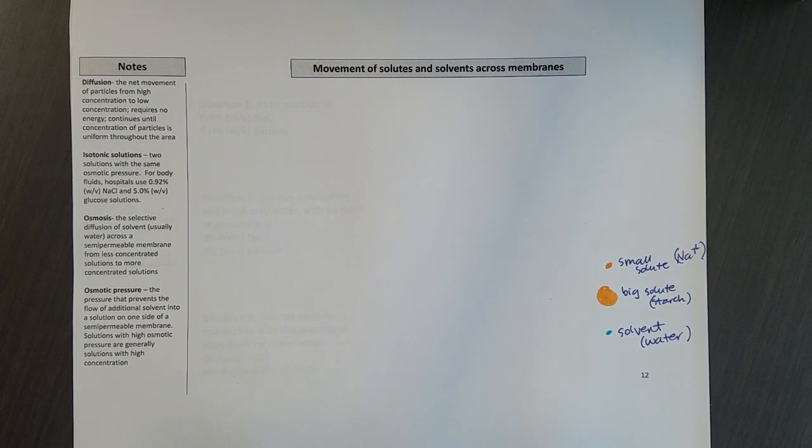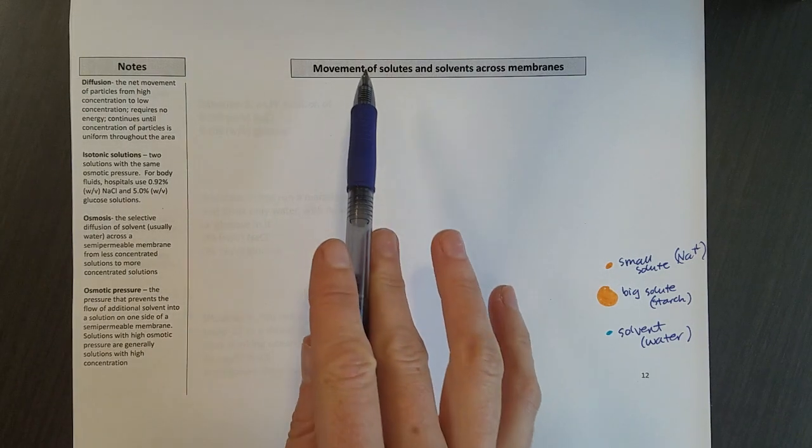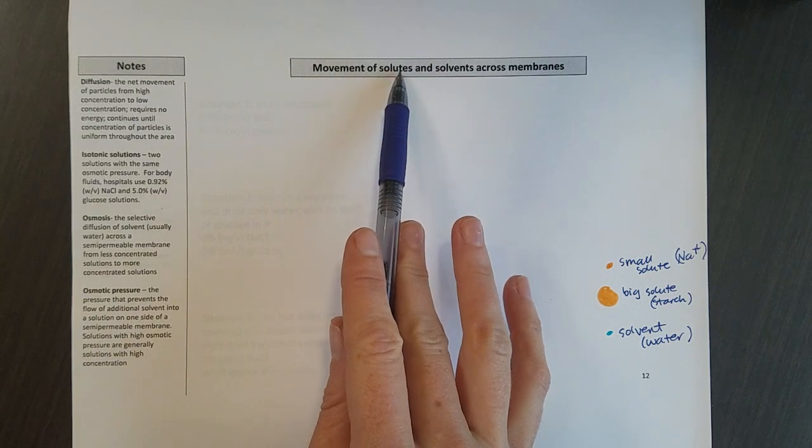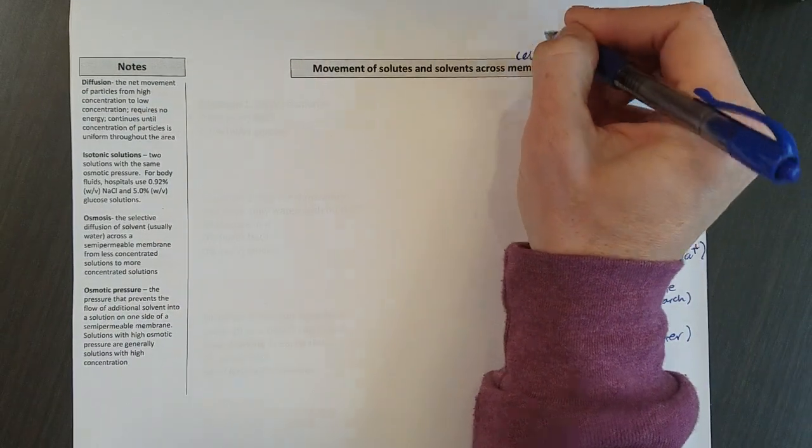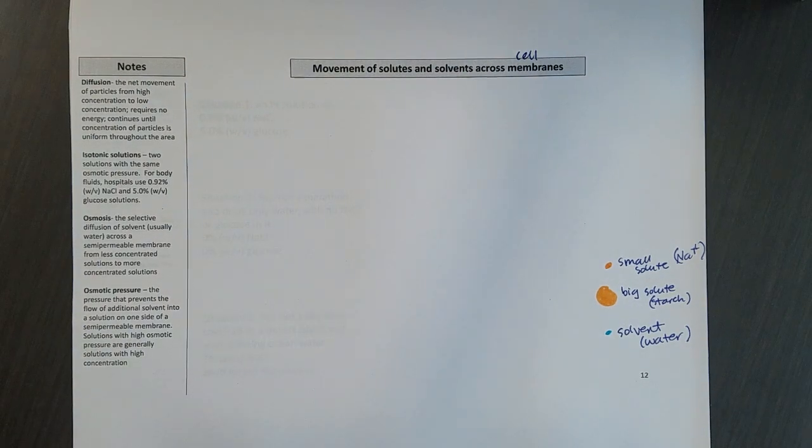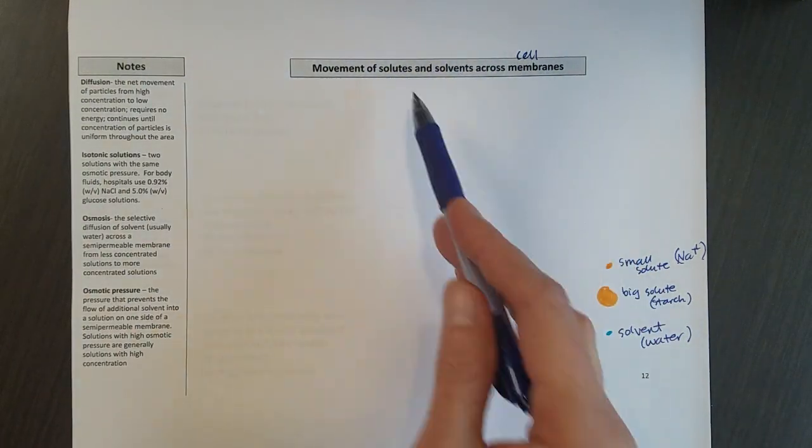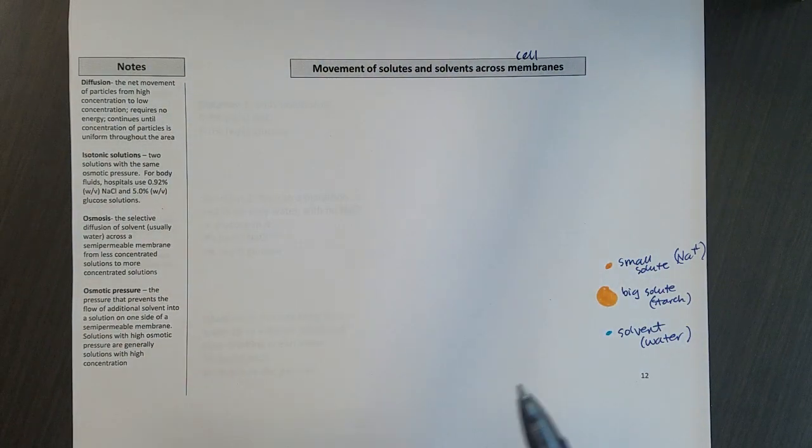So the final thing we're going to look at in this chapter about solutions is movement of solutes and solvents across membranes. And we're going to be most interested in cell membranes because the focus of this class is physiology-related chemistry.